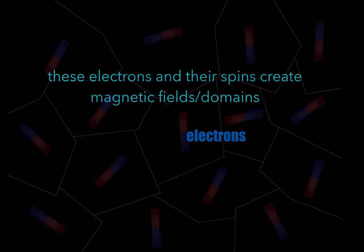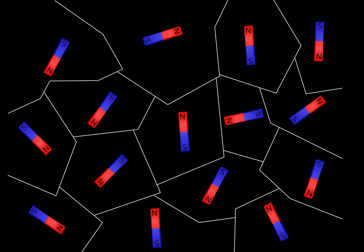A magnet — or magnetic material — is made out of millions and millions of little magnetic domains. When you have a nail, nails naturally do not attach to each other because their magnetic domains are randomly situated. They're oriented in random positions, which ends up canceling out their magnetism and gives them no magnetic properties at all.